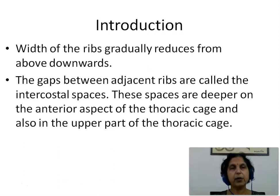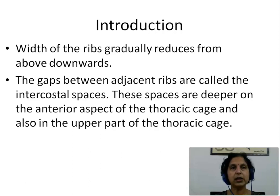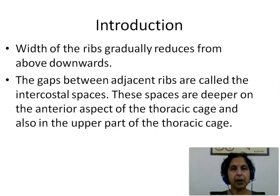When we talk of the width of the ribs, this gradually reduces from above downwards. The gaps between adjacent ribs are called the intercostal spaces. These spaces are deeper on the anterior aspect of the thoracic cage and also in the upper part of the thoracic cage.